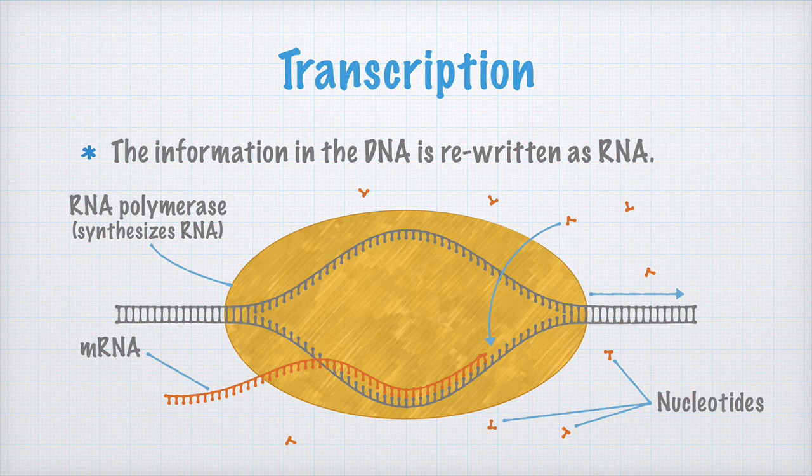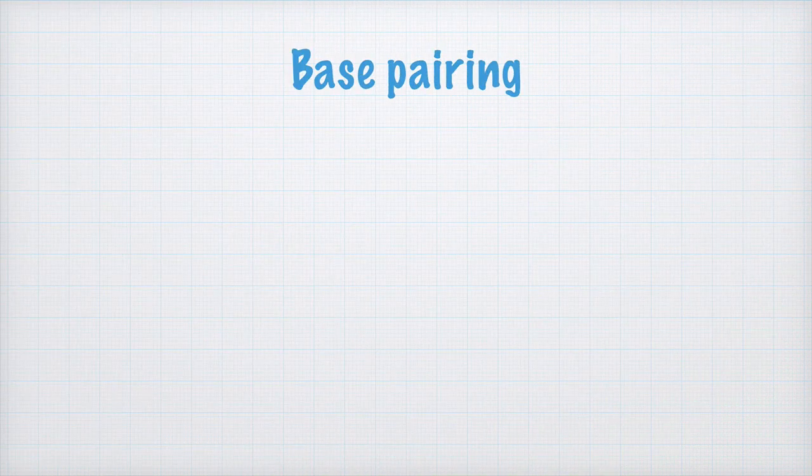Now this is essentially what happens during the transcription. So if you have copied this image, let's move on to how the information in the DNA molecule is transcribed to RNA. To do this, you need to understand how base pairing works.